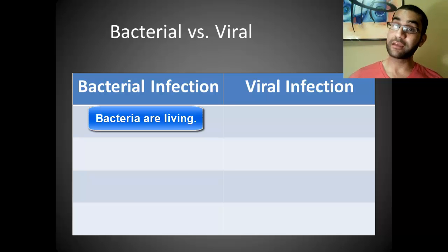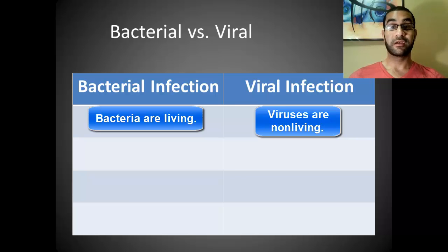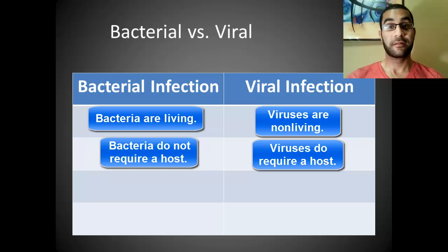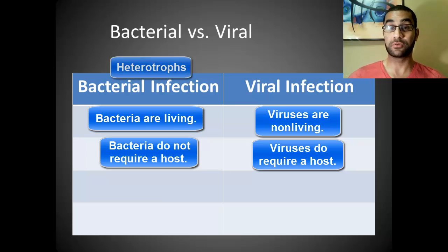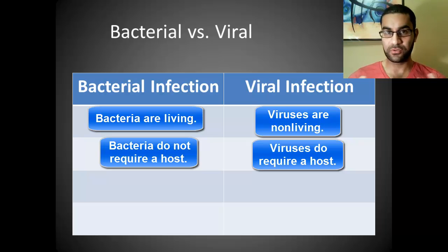A virus, on the other hand, is non-living, which means it does not have all eight characteristics of life. Because bacteria is living and a virus is non-living, that plays a very important role in what's necessary for each one to function. Bacteria do not require a host cell in order to reproduce, replicate, and function. Whereas a virus absolutely does require a host cell because it's non-living on its own. The disease-causing bacteria are heterotrophs — they need a nutrient source, but they can function independently without taking advantage of another cell's organelles.